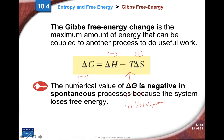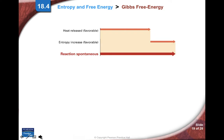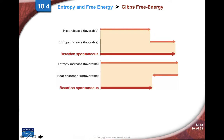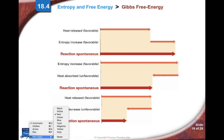The numerical value of delta G is negative in a spontaneous process because the system loses free energy. You have a practice sheet on free energy with similar diagrams to this. I'm going to talk you through how these diagrams work.